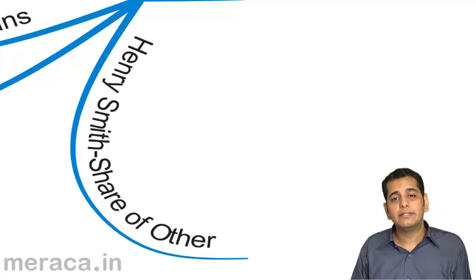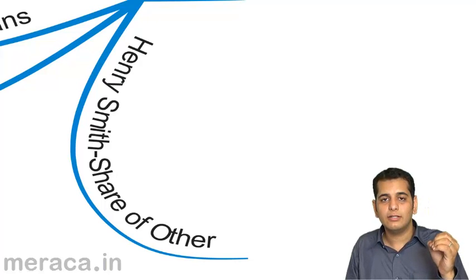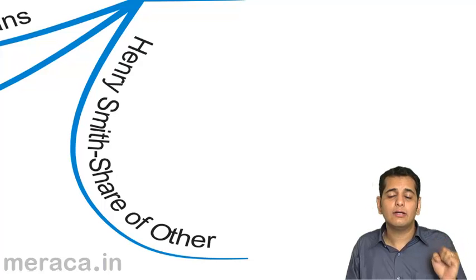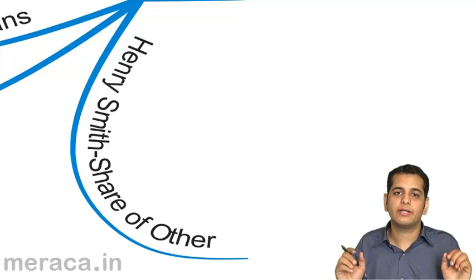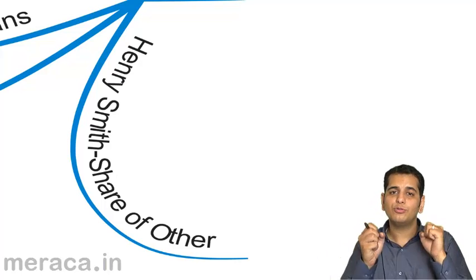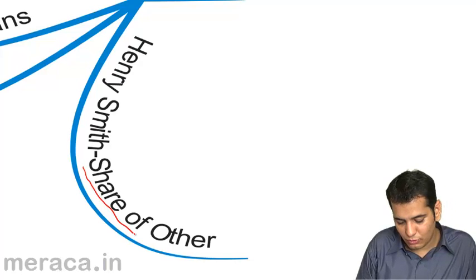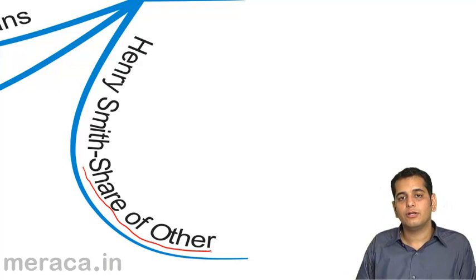Then we studied the definition of Henry Smith. What did he say? Henry Smith said that economics is nothing but obtaining one's share from the society. What is the product given to the whole society? And how do you obtain your share from it? His definition is called as share of other.